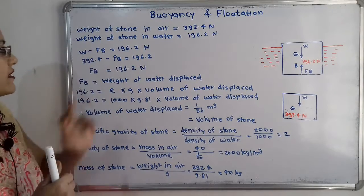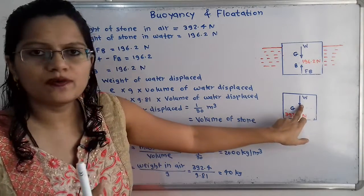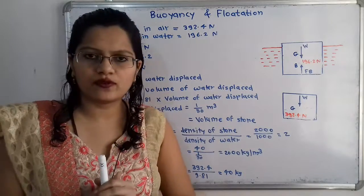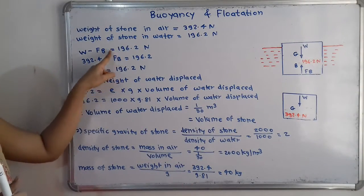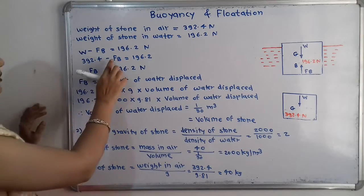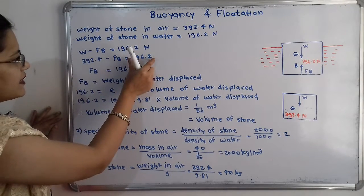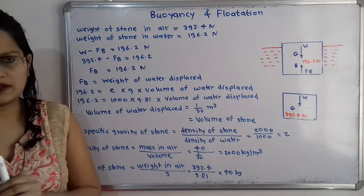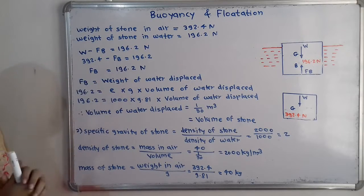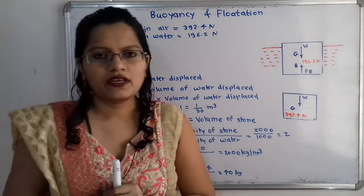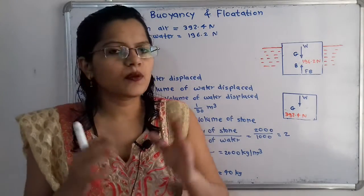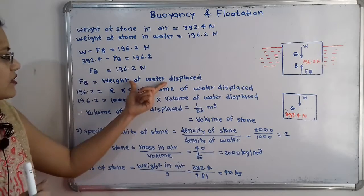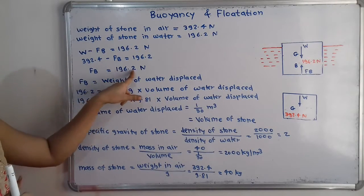From the equilibrium equation, W minus FB = 196.2 N. We know W = 392.4 N. Substituting, we transfer FB to the right-hand side and 196.2 to the left-hand side, giving FB = 392.4 minus 196.2 = 196.2 N. So the buoyant force FB = 196.2 N, which equals the weight of water displaced.